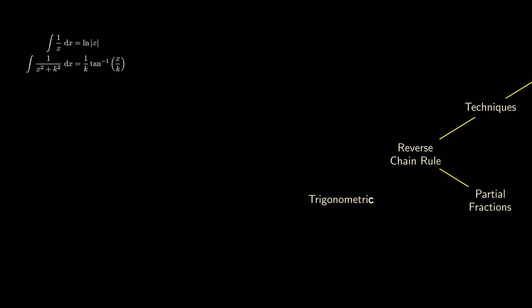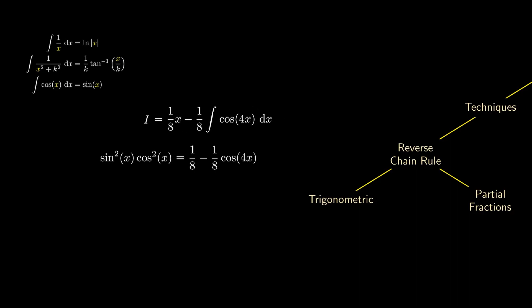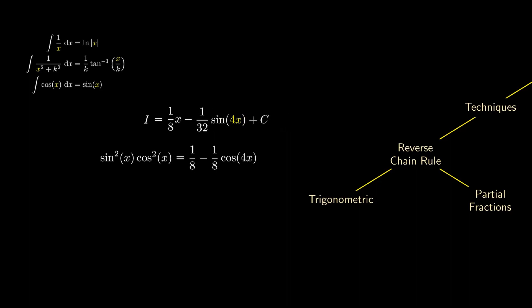There are many interesting trigonometric integrals we can calculate as well. For example, we want to find the integral of sin squared times cosine squared. While it's not as straightforward as other integrals, we can simplify using double angle formulae. Plugging the expression into the integral, we can integrate the constant to get 1 over 8 times x. For the cosine term, there's a 4x inside, so we need to ensure that the derivative of 4x is present before we can do the integration. Since we are integrating cosine and the derivative of 4x is present, we can apply the reverse chain rule to get 1 over 32 sine of 4x, which is the final answer.